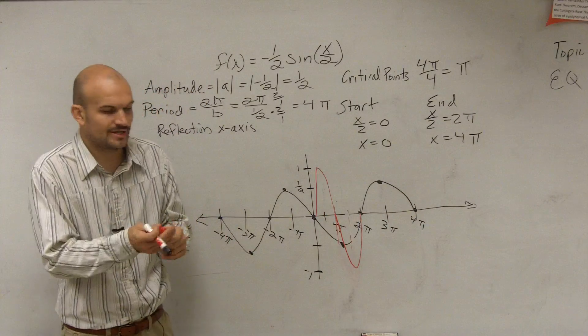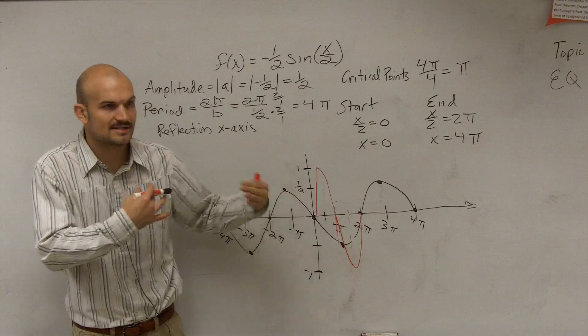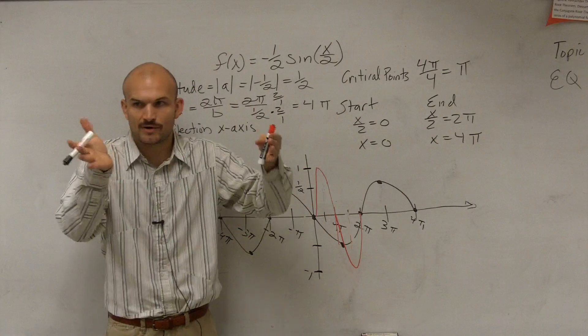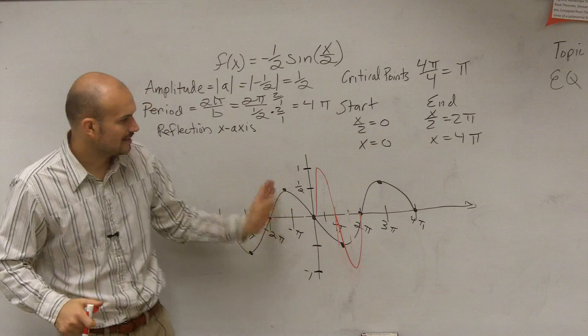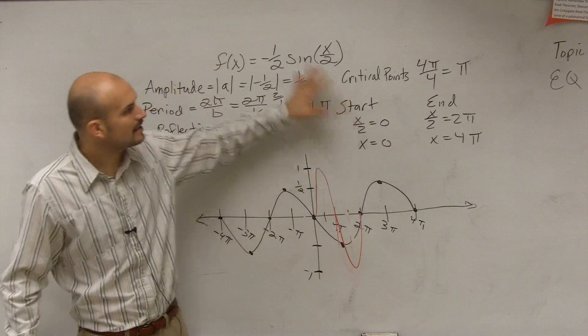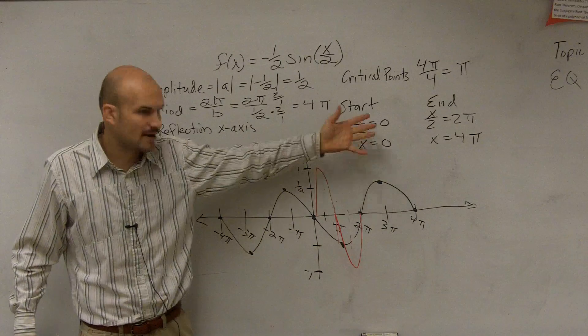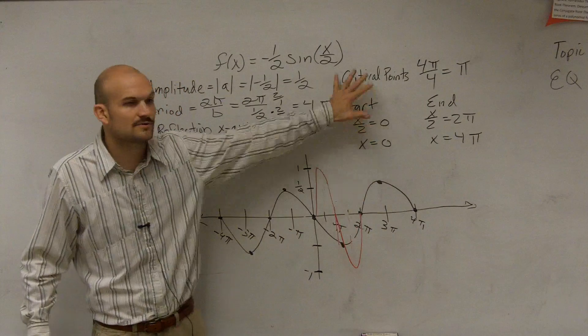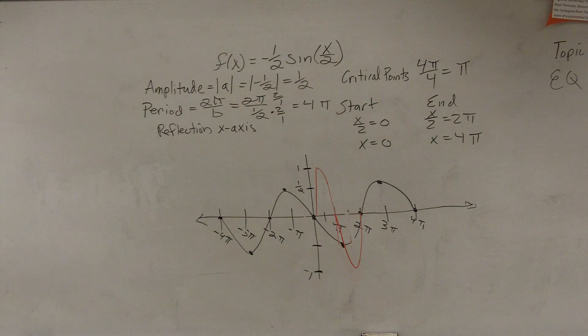So one way to do it, which I showed you guys last class, is you can always graph the parent function first and then make the necessary transformations like you did with quadratics. You know, you graph the parent graph and they say, oh, shift left, shift up, reflect, right? But for this, a lot of times just with our spacing, I like to find all the information and then just graph it with this information. However, you can always go back to looking at the parent graph and saying, how did it change from the parent graph to what I'm graphing? Okay? We can go over another one if you guys want to.